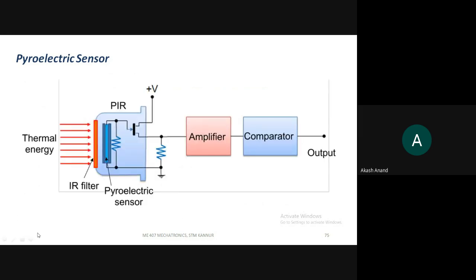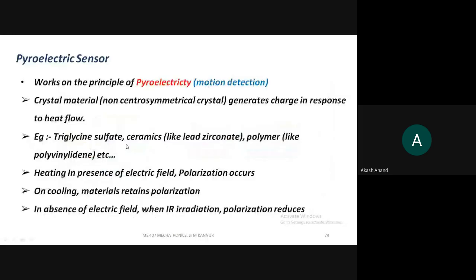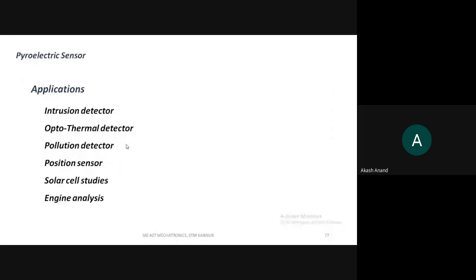The sensor receives thermal energy from a moving object, which passes through an IR filter into a pyroelectric sensor. The pyroelectric sensor is connected to an amplifier and a comparator to get the required output. When the thermal energy of an object changes, a corresponding output is produced. The amplifier increases the comparatively small voltage from the pyroelectric sensor, and the comparator compares it against known values to detect motion.